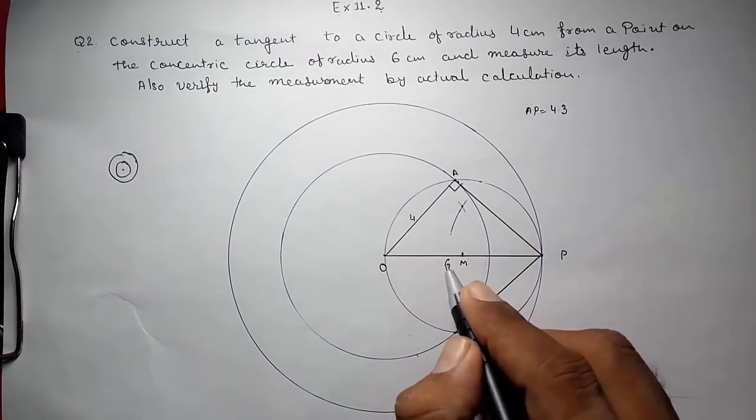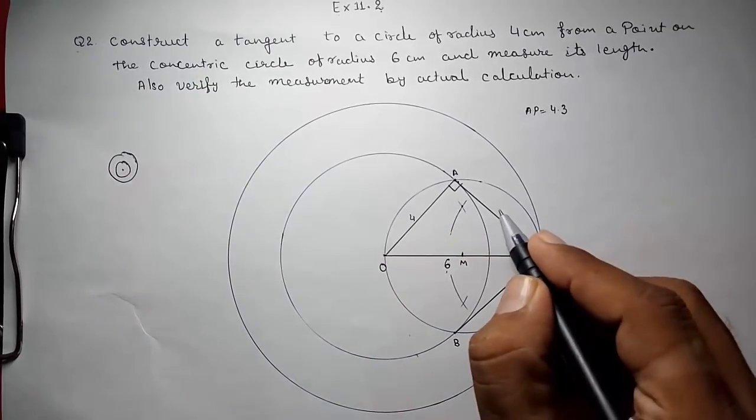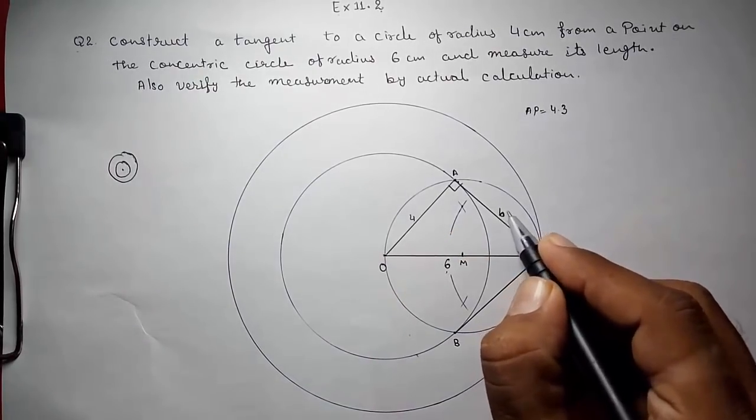And the radius of the smaller is 4, and the radius of the bigger is 6. So here hypotenuse will be 6 and one of the sides will be 4. And this we have to find, so call it as B.